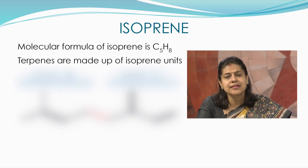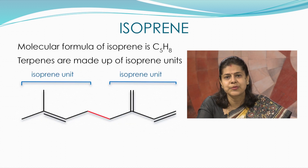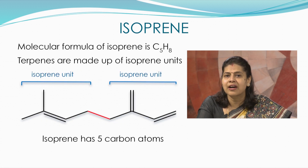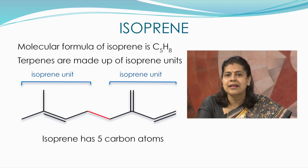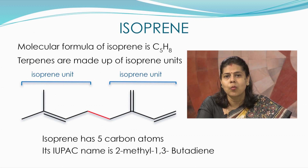Now, look at the structure of isoprene. It has 5 carbon atoms. Its IUPAC name is 2-methyl-1,3-butadiene.